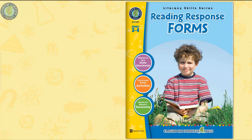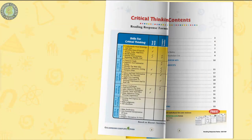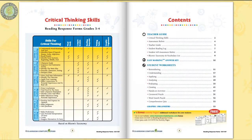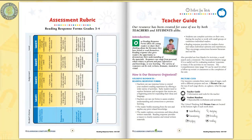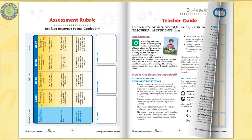This ready-made lesson plan on reading response forms is for learners in grades 3 to 4. Offer young readers the opportunity to share their thoughts about their literary experiences. Our resource provides an easy-to-use breakdown of a novel to ensure student comprehension. Aligned to the state standards, this resource is full of vocabulary and open-ended worksheets.